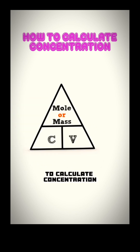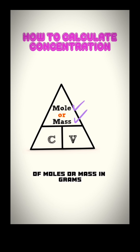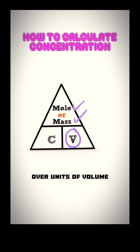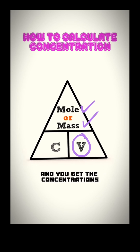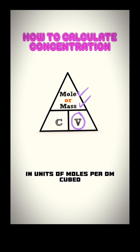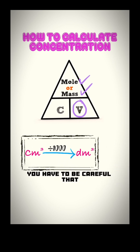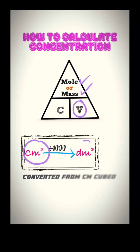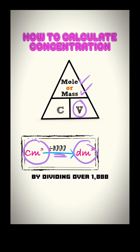To calculate concentration, you can divide units of moles or mass in grams over units of volume, and you get the concentration in units of moles per decimetre cubed (mol/dm³). You have to be careful that the volume units have to be converted from cm³ to dm³ by dividing by 1000.